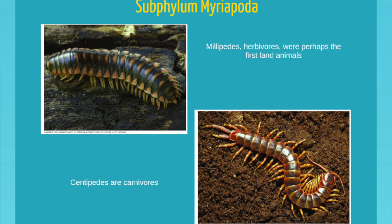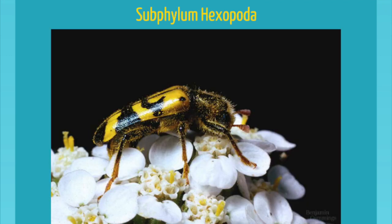Arthropods represent the most successful animal phyla of all time. Within that group, the hexapods — what you know as bugs, common insects — have basically six legs and three body segments. Most of them are winged. They are the most successful of the arthropods. And of the most successful insects — the most successful hexapods — are beetles. Hexapods include butterflies, grasshoppers, beetles, ants, dragonflies, damselflies, mosquitoes, and on and on. They are the most diverse and most numerous type of arthropod on the planet.